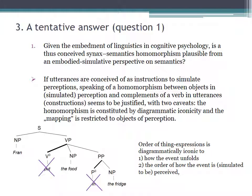In the case of Fran put the food in the fridge, the order of thing expressions is diagrammatically iconic to, first, how the event unfolds and, second, to the order of how the event is perceived or simulated to be perceived, i.e. conceptualized.